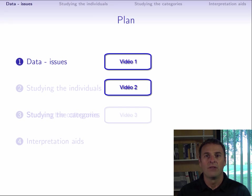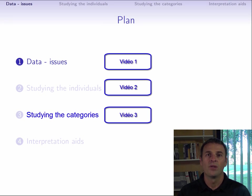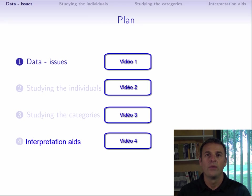We'll then see how to directly visualize the point cloud of categories. We'll also show how in MCA the point cloud of individuals and that of the categories can be shown simultaneously on the same graph. This is called the simultaneous representation of the point cloud. In the final video, we will go through various classical interpretation aids in multiple correspondence analysis.